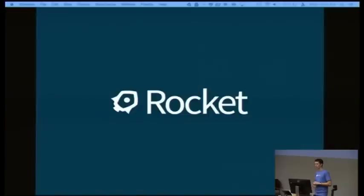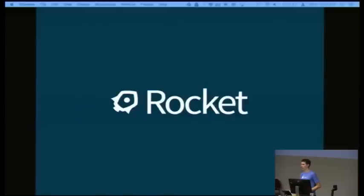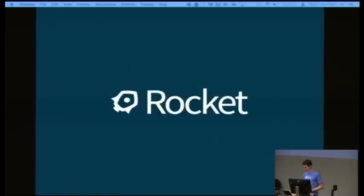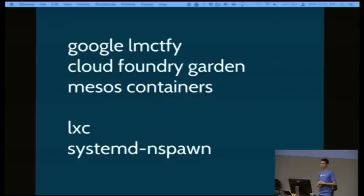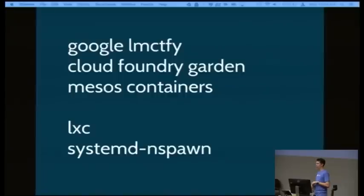Another application container runtime is Rocket, which is a standard and an application runtime engine that we've built at CoreOS. It's very much in a prototype stage, but what we want is multiple independent implementations of what we're calling the App Container Spec — an independent specification from our implementation. You can imagine multiple implementations for other operating systems, but they all agree on how to lay out filesystems and how those are transported and discovered. There are also other container runtime systems: 'Let Me Contain That For You' (lmctfy) from Google, Cloud Foundry's Garden project, Mesos's own container standard, and system-focused containers like systemd-nspawn.